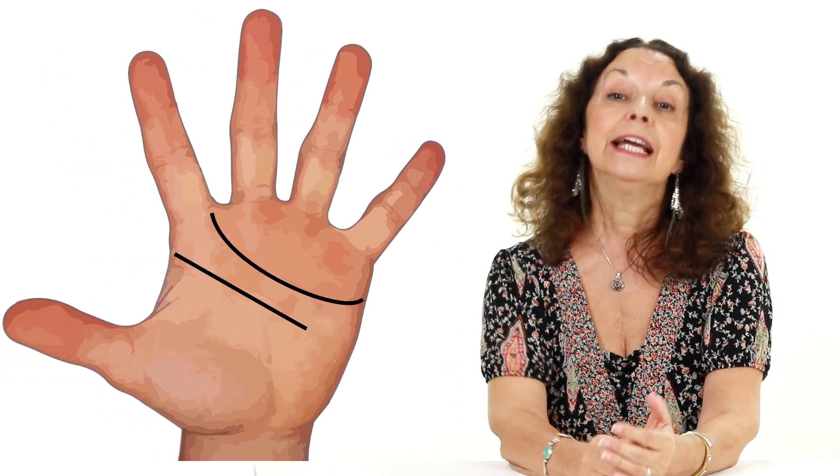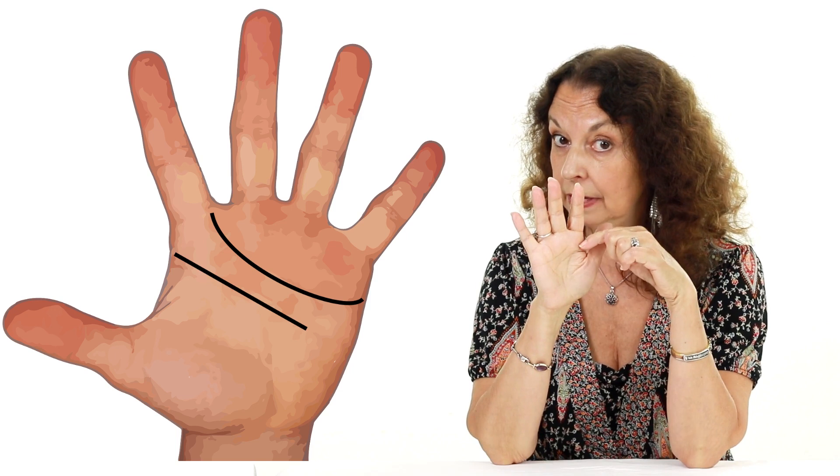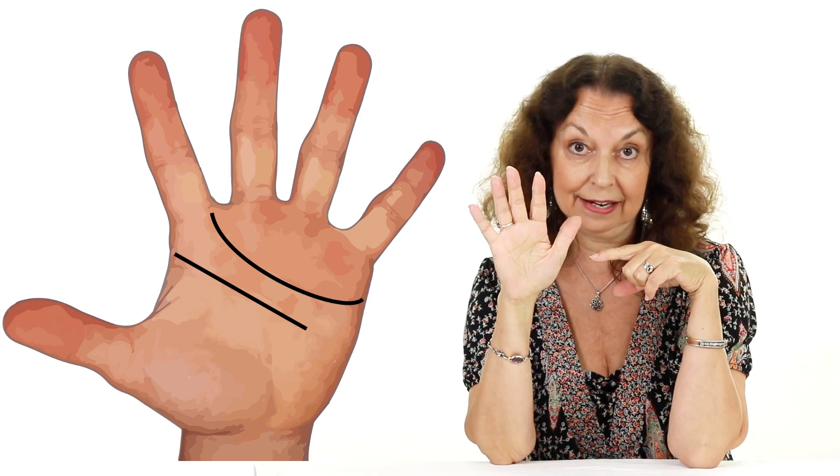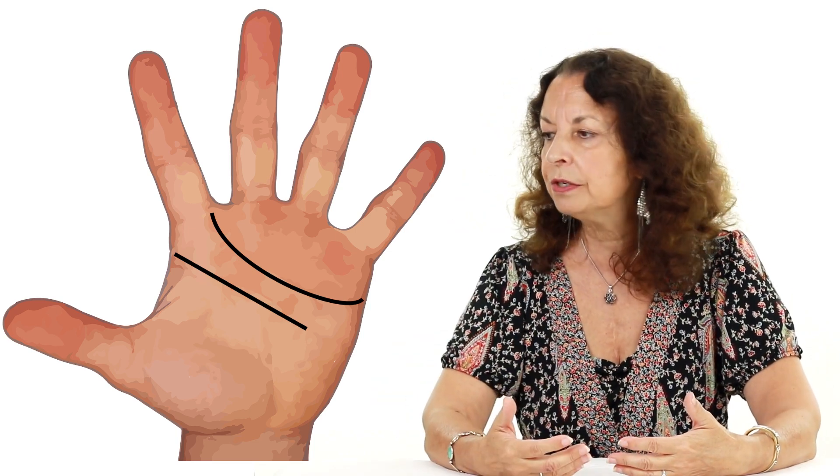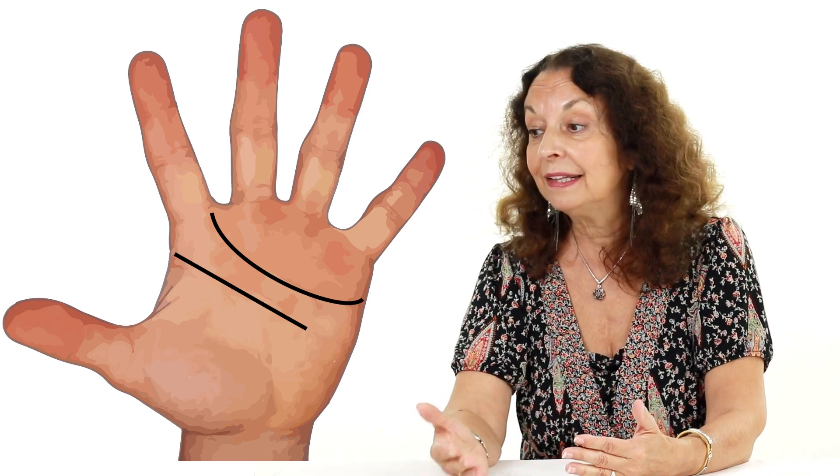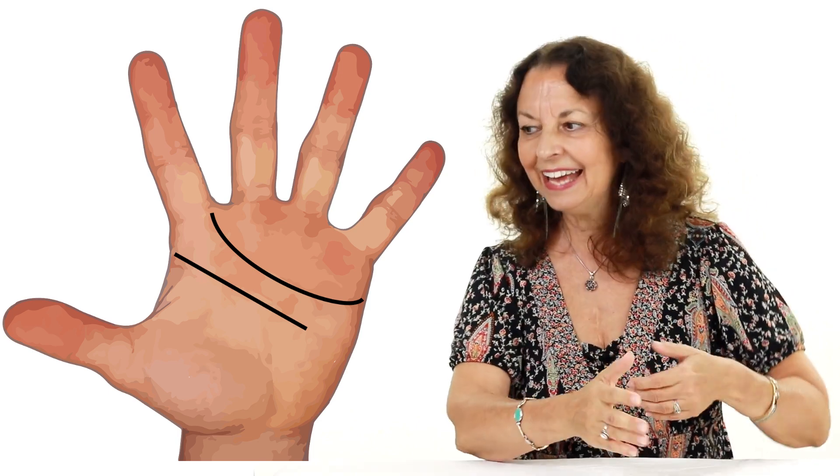Now, the next example is if you have a curved heart, but a straight head. Very, very common. So when you have the curved heart, it means that you are in touch with your emotions and you have very sincere intentions.